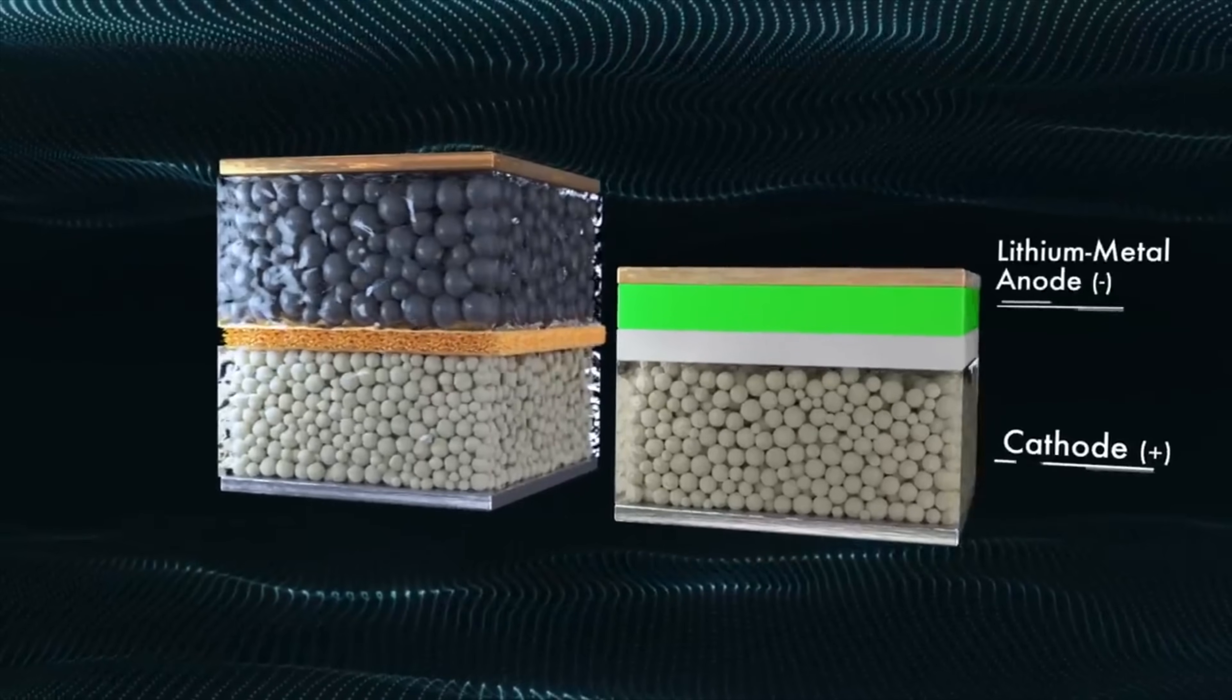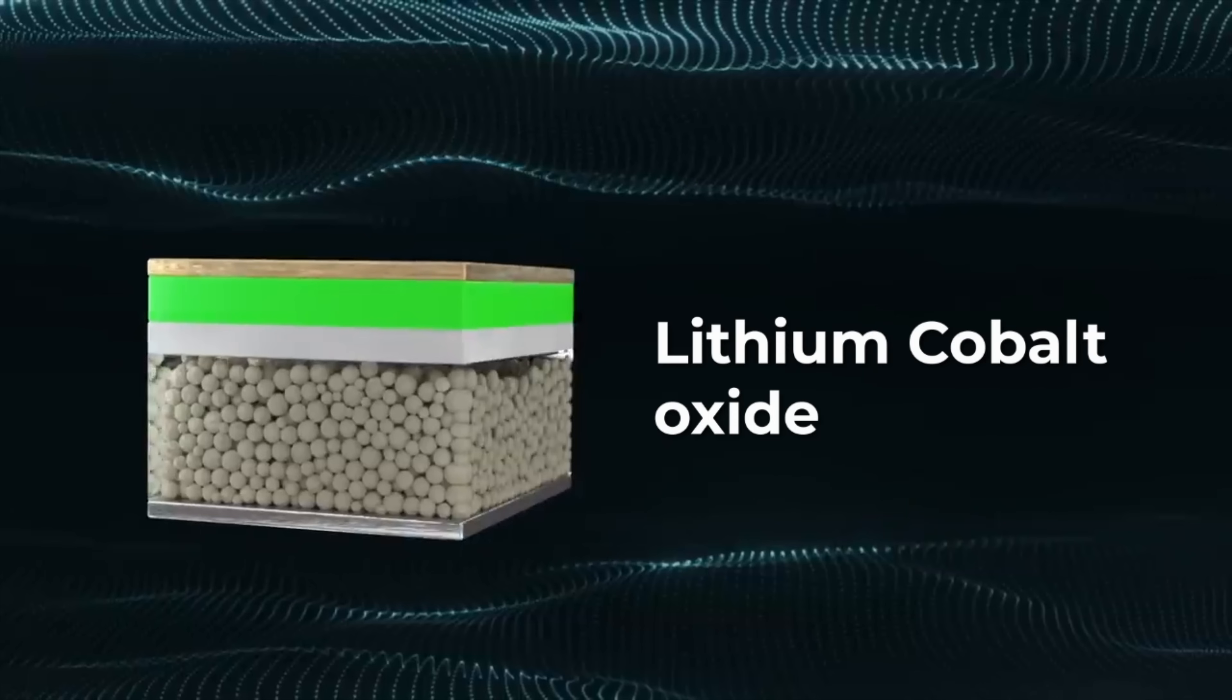In comparison, the typical cathode material used in lithium-ion batteries, such as lithium cobalt oxide, has a capacity of only 140 mAh per gram.